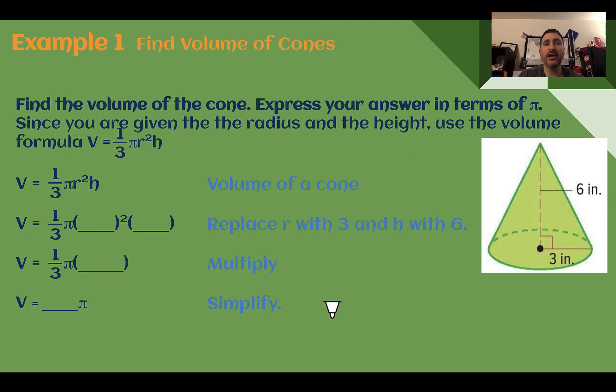Example one, find volume of cones. Find the volume of the cone, express your answer in terms of pi. Since we're given the radius and the height, use the volume formula V equals one-third pi r squared h. So here we can see we have our cone, our radius here is three, our height is six. Let's plug those values in.